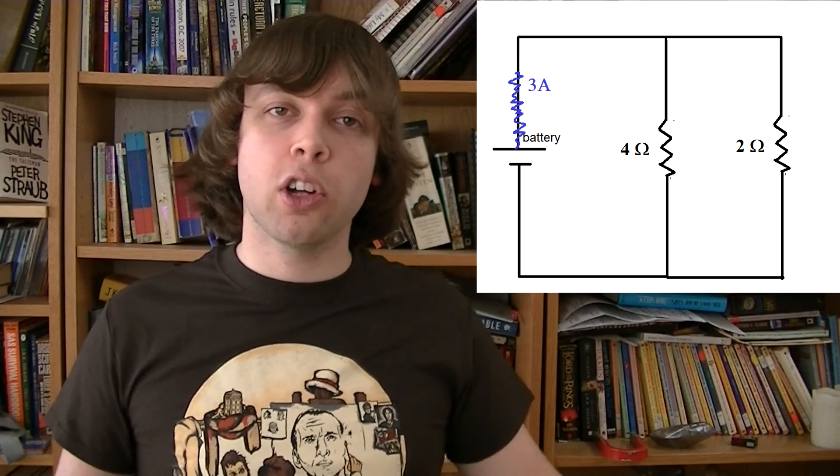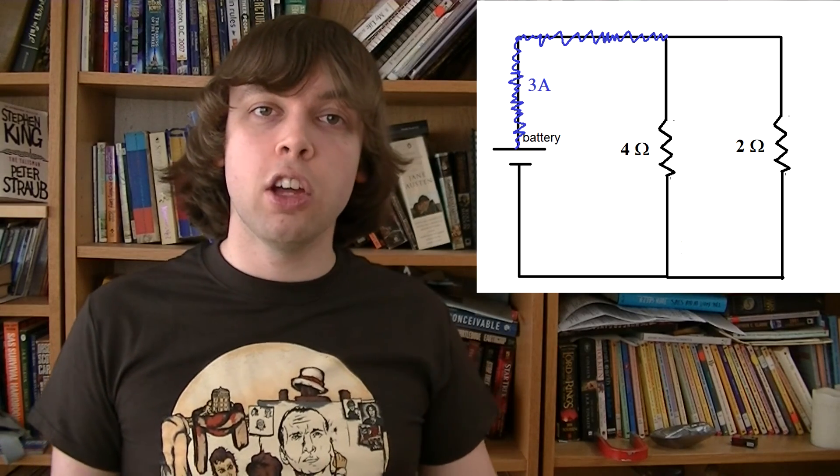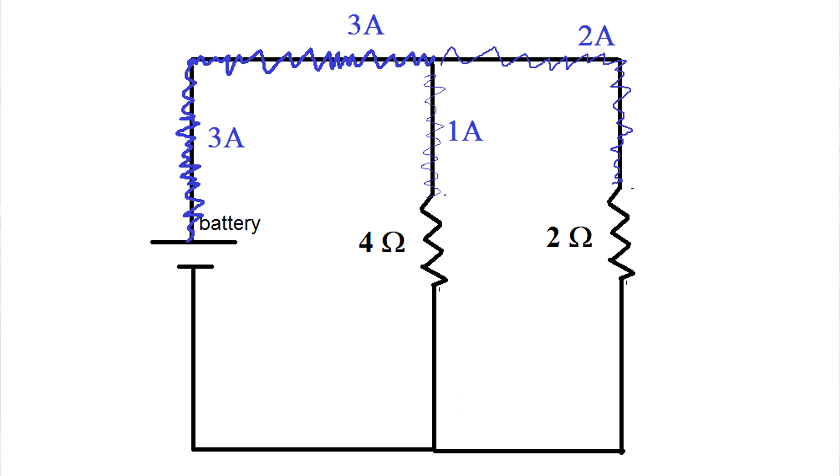Here for example, three amps of current flow from the battery. Since one branch has half the resistance of the other branch, it will receive double the current. So two amps will flow down the easier path and one amp will flow down the harder path. And when they reach the junction on the other side, the two separate currents will combine back together to make three amps again.